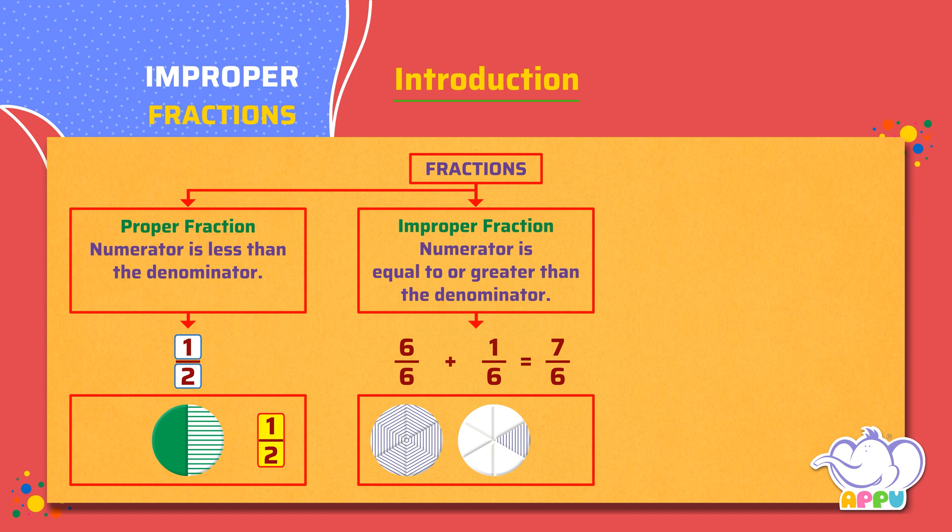Here, the numerator 7 is more than the denominator 6. So, 7 by 6 is an improper fraction.